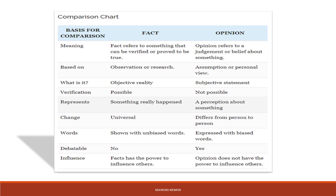Moving forward, we can compare fact and opinion and see on what criteria we can differentiate between them. When we talk about meaning, facts refer to something that can be verified or proved — we need to justify, verify, and then prove it. Opinions refer to judgment, belief, or attitudes towards something, which are more personal in nature. As far as meaning is concerned, facts can be proven and opinions are general judgments or attitudes.